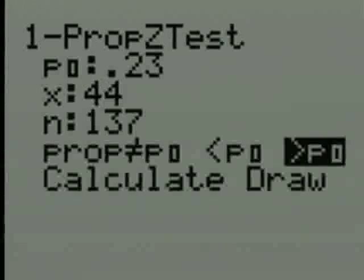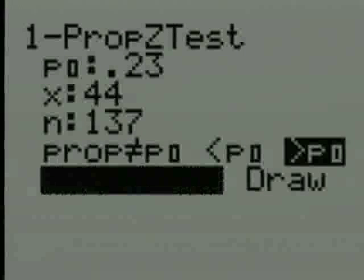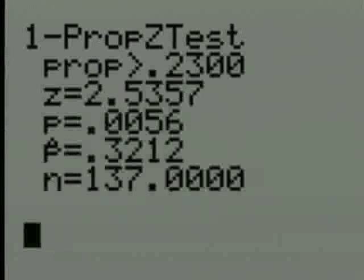x, that's my numerator, that's how many successes I had, 44. n is 137. The alternative hypothesis, we're trying to see if this evidence suggests it's actually greater than 0.23. If I calculate now, I get a p-value, and the p-value is 0.0056.